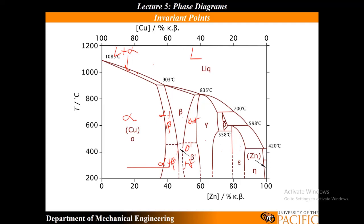Continuing to fill out the phase diagram: gamma on one side and beta on the other gives gamma plus epsilon. Then pure delta phase, so gamma plus delta. Liquid and delta give delta plus liquid, then gamma plus liquid, then beta plus liquid, then epsilon plus liquid. And the final region is epsilon plus eta. Excuse my Greek letters.